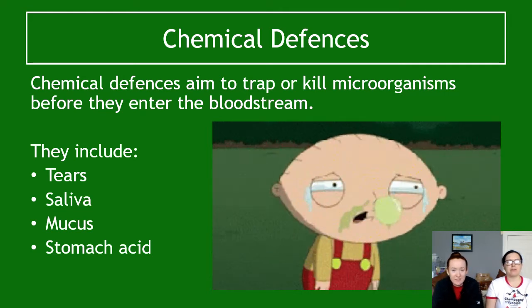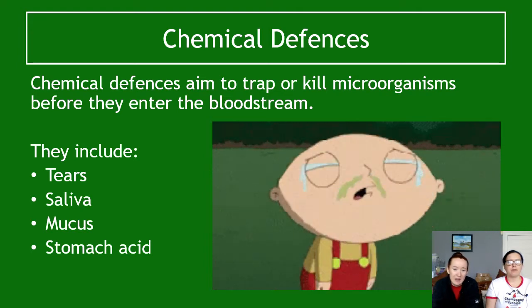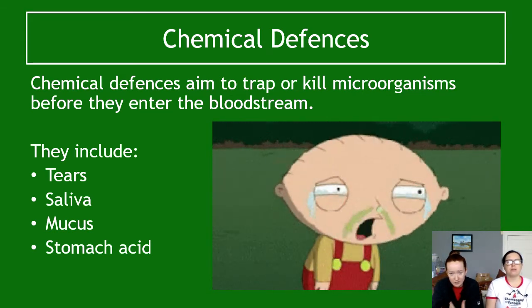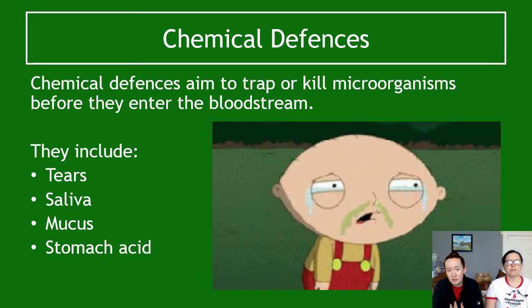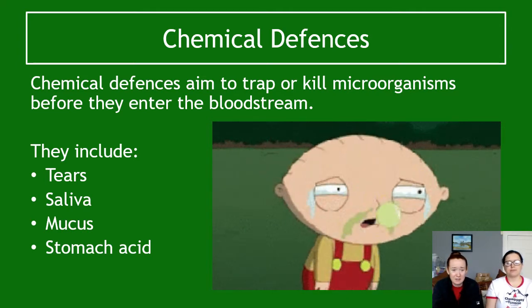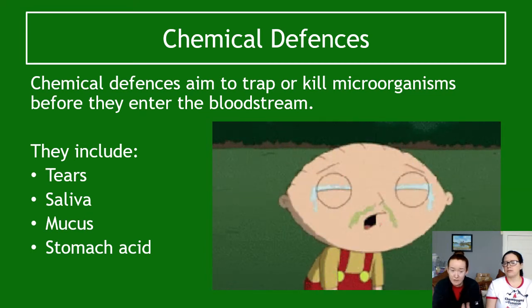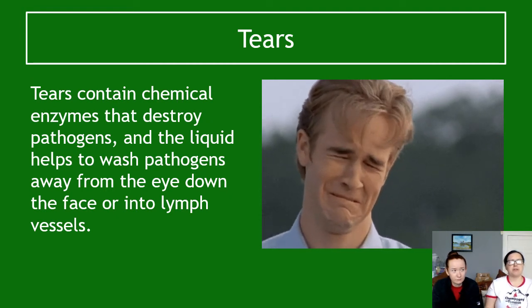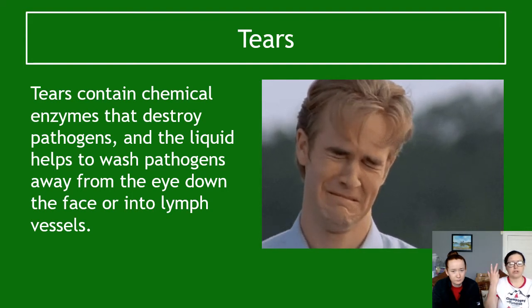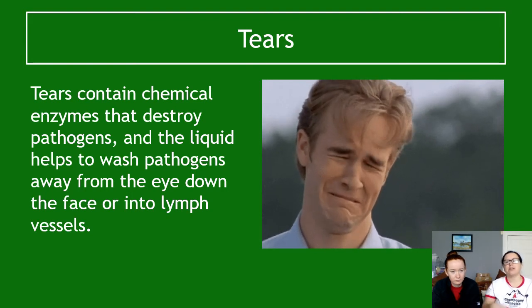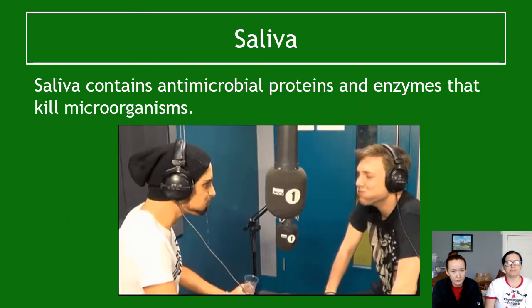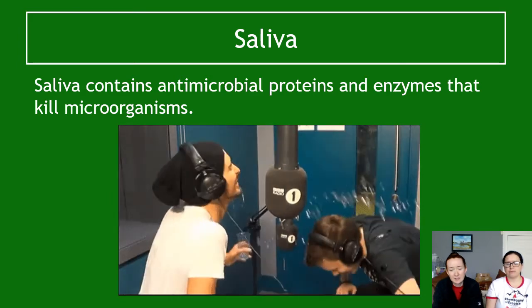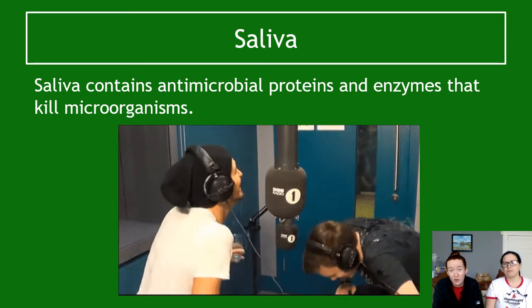The other type of non-specific defences are chemical defences, which try to trap or kill microorganisms before they enter the bloodstream. Common examples include tears, which contain enzymes that destroy pathogens as well as liquid that physically washes material away. Saliva contains antimicrobial proteins and enzymes that kill microorganisms. Mucus, produced along airways and the digestive tract, traps pathogens so they can be swept out of the body or excreted. Stomach acid kills pathogens on food — so if you've eaten something off, stomach acid tries to deal with those pathogens.